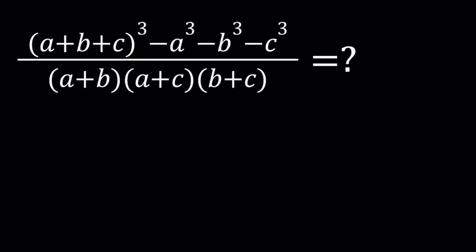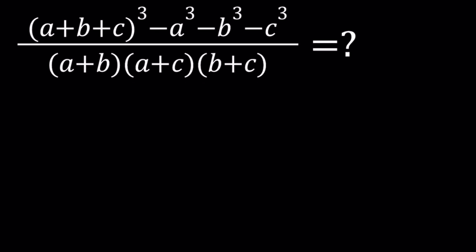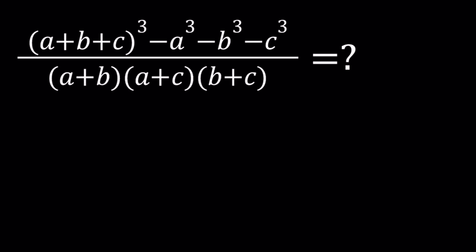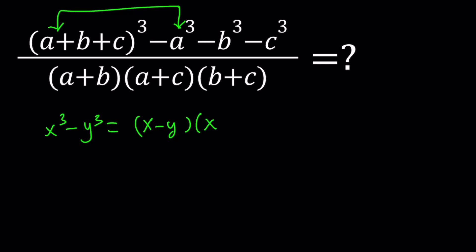So let's go ahead and factor the numerator and then we're going to simplify after that. To simplify the numerator, I'm going to go ahead and treat these two terms as a difference of two cubes. As you know, x cubed minus y cubed can be written as x minus y multiplied by x squared plus xy plus y squared.